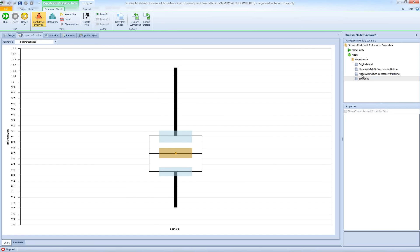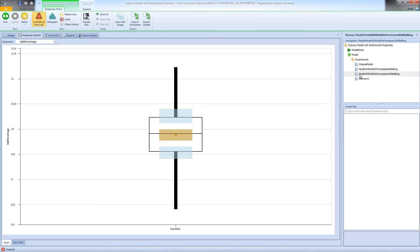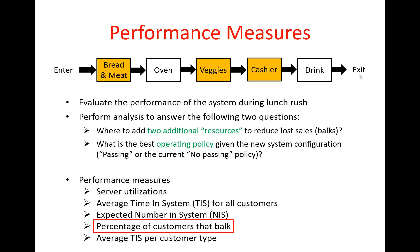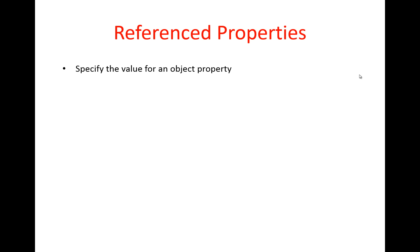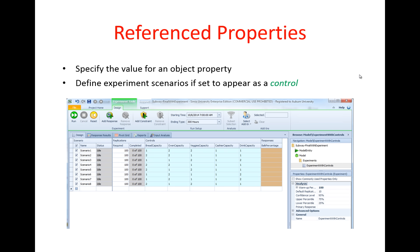Let me go back to my slides and talk about referenced properties. A referenced property is used to specify the value for an object property, just like any other property in our model. However, they have a specific functionality which allows us to facilitate experimentation with multiple scenarios all in one experiment. In particular, if we set a reference property to appear as what we call a control in our experiment, we will be able to run multiple scenarios in one experiment and perform comparisons.